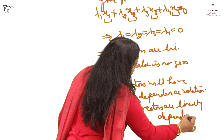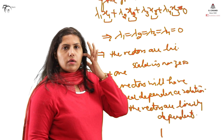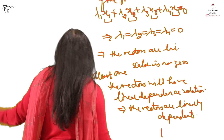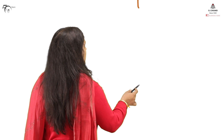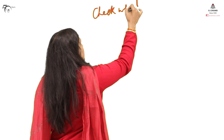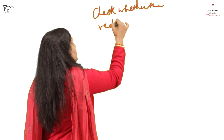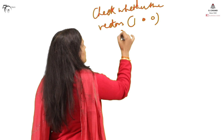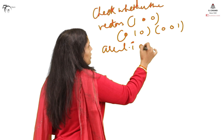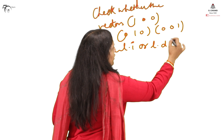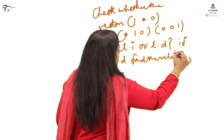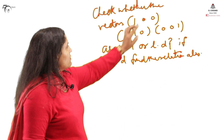Example 1: Check whether the vectors (1,0,0), (0,1,0), and (0,0,1) are linearly independent or linearly dependent. If linearly dependent, find the relation also. I will call these X1, X2, and X3.